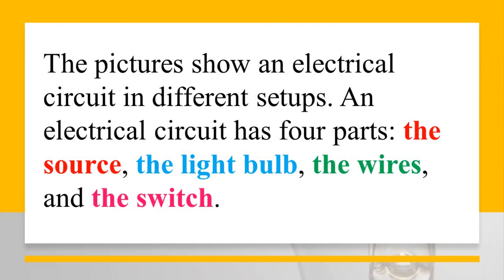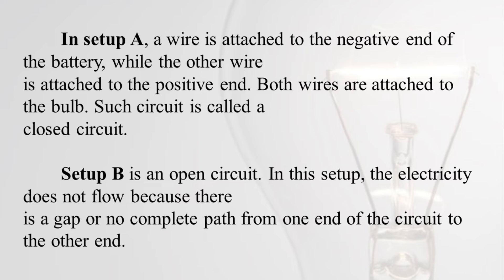The pictures show an electrical circuit in different setups. An electrical circuit has four parts: the source, the light bulb, the wires, and the switch. In Set-up A, a wire is attached to the negative end of the battery while the other wire is attached to the positive end; both wires are attached to the bulb — this is called a closed circuit. Set-up B is an open circuit; electricity does not flow because there is a gap or no complete path from one end of the circuit to the other.